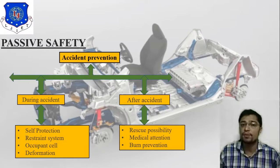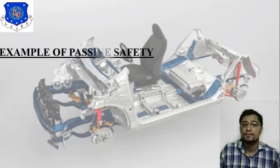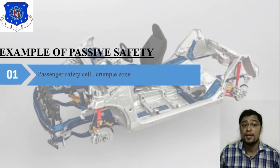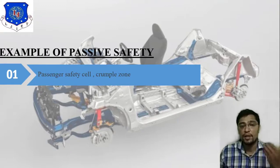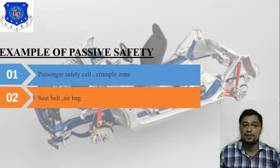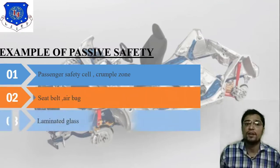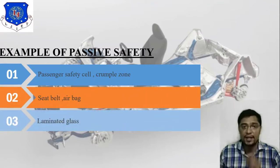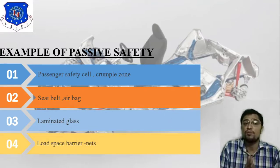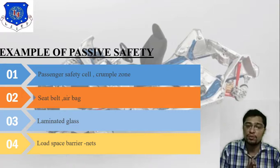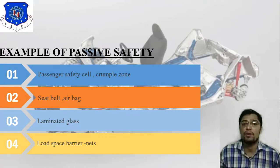Examples of passive safety: first is passenger safety cell, second is crumple zone — which is in the front part of the four-wheeler — third is seat belt and airbag, fourth is laminated glass, and last is load space barrier. These are the examples of passive safety.